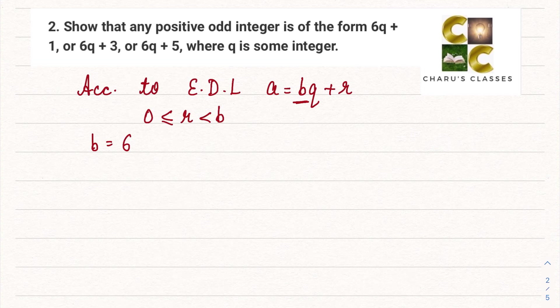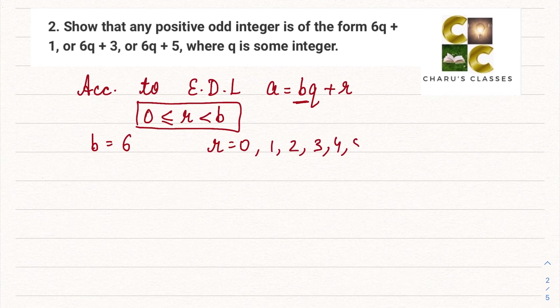We have 6. So r can be 0 or greater than 0 but it has to be less than b. So in this case r can be 0 or 1, 2, 3, 4, and 5. All these values are possible for r. Now let's consider the cases.